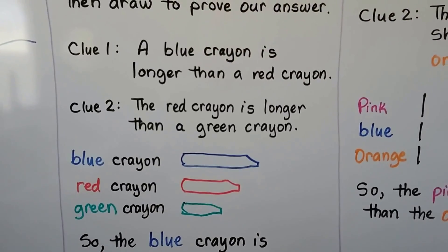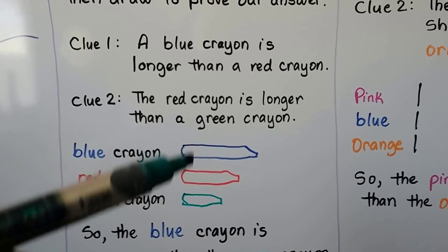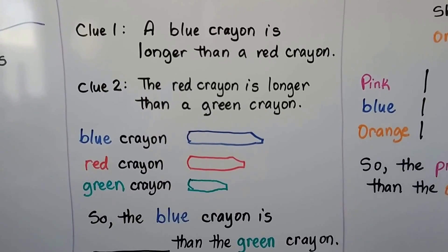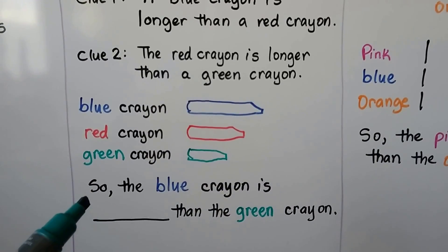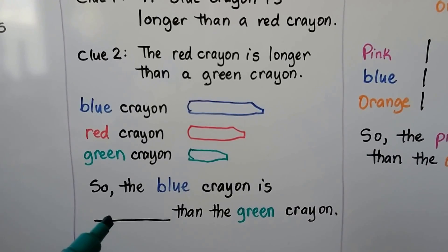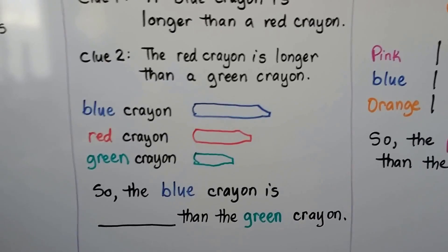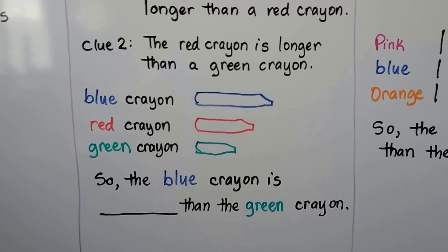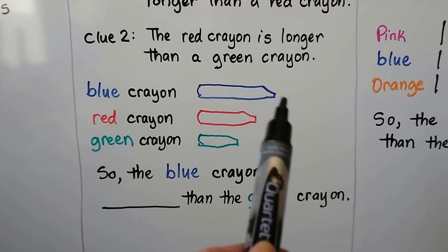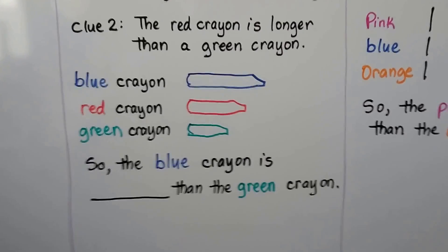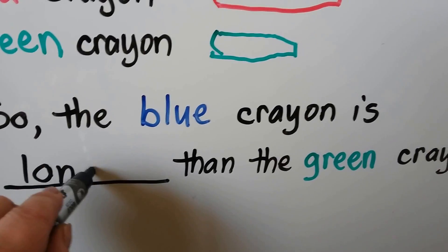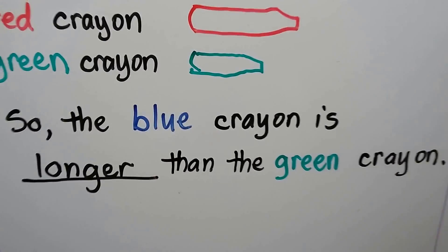Did we do it correctly? A blue crayon is longer than a red crayon — yes. The red crayon is longer than the green crayon — yes. So the blue crayon is blank than the green crayon. Is the blue crayon longer or shorter than the green crayon? The blue crayon is longer — it's sticking out farther. The blue crayon is longer than the green crayon.